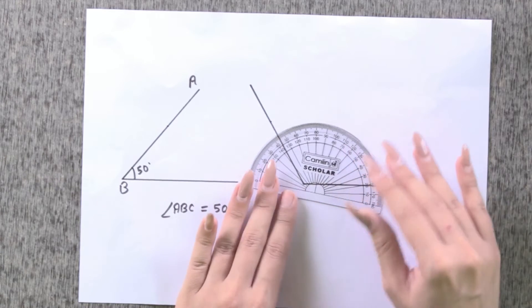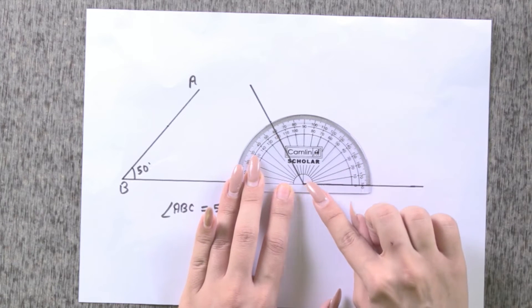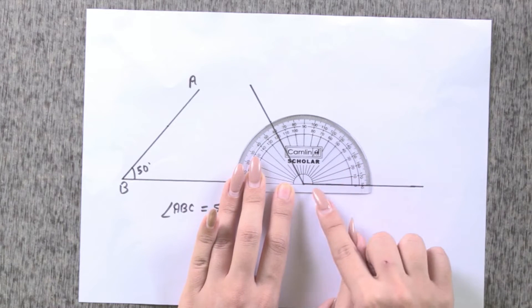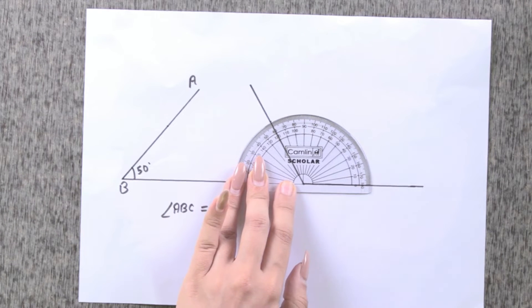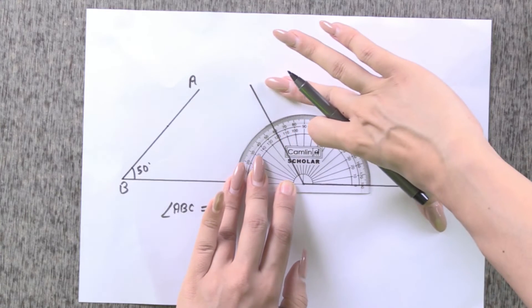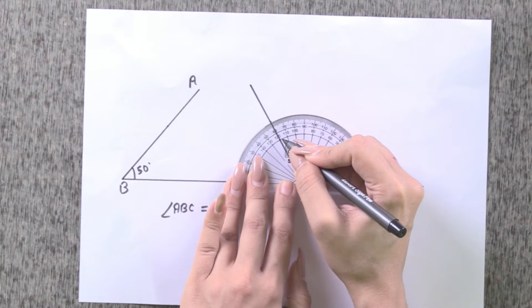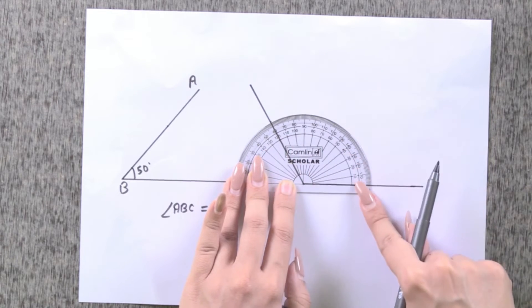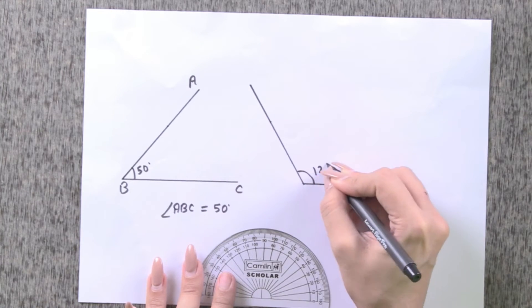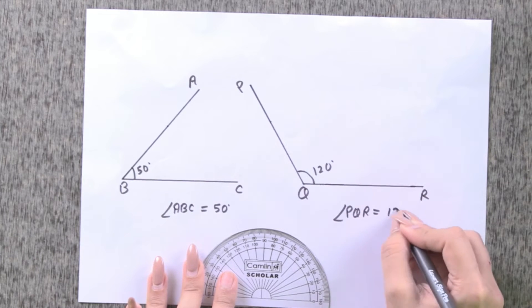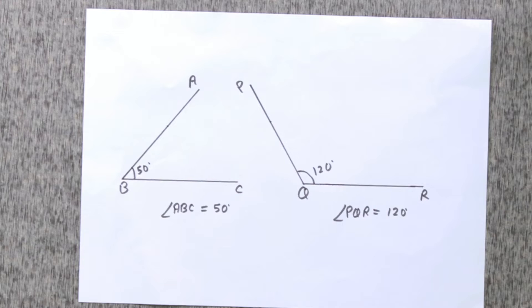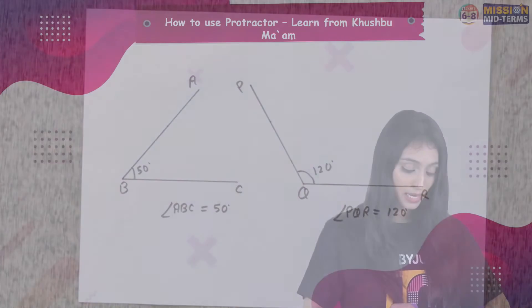Now let's measure the other angle in a similar manner using the protractor. You can see again the midpoint is coinciding with the vertex of the angle and the baseline is coinciding with the baseline on the protractor. This angle is greater than 90 degrees — it's an obtuse angle. So we consider 120 degrees, not 60 degrees. We always consider the markings on the inner circle. This angle is 120 degrees, so angle PQR = 120°. That's how we measure angles using a protractor.